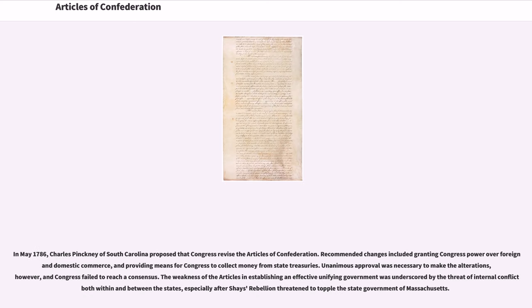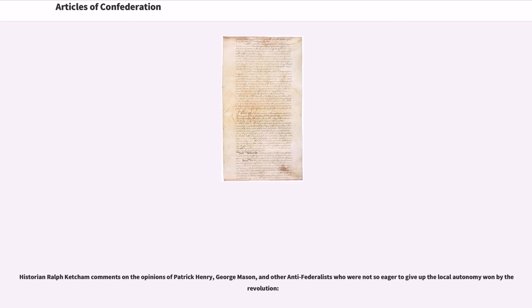In May 1786, Charles Pinckney of South Carolina proposed that Congress revise the Articles of Confederation. Recommended changes included granting Congress power over foreign and domestic commerce, and providing means for Congress to collect money from state treasuries. Unanimous approval was necessary to make the alterations, however, and Congress failed to reach a consensus. The weakness of the Articles in establishing an effective unifying government was underscored by the threat of internal conflict both within and between the states, especially after Shays' Rebellion threatened to topple the state government of Massachusetts.